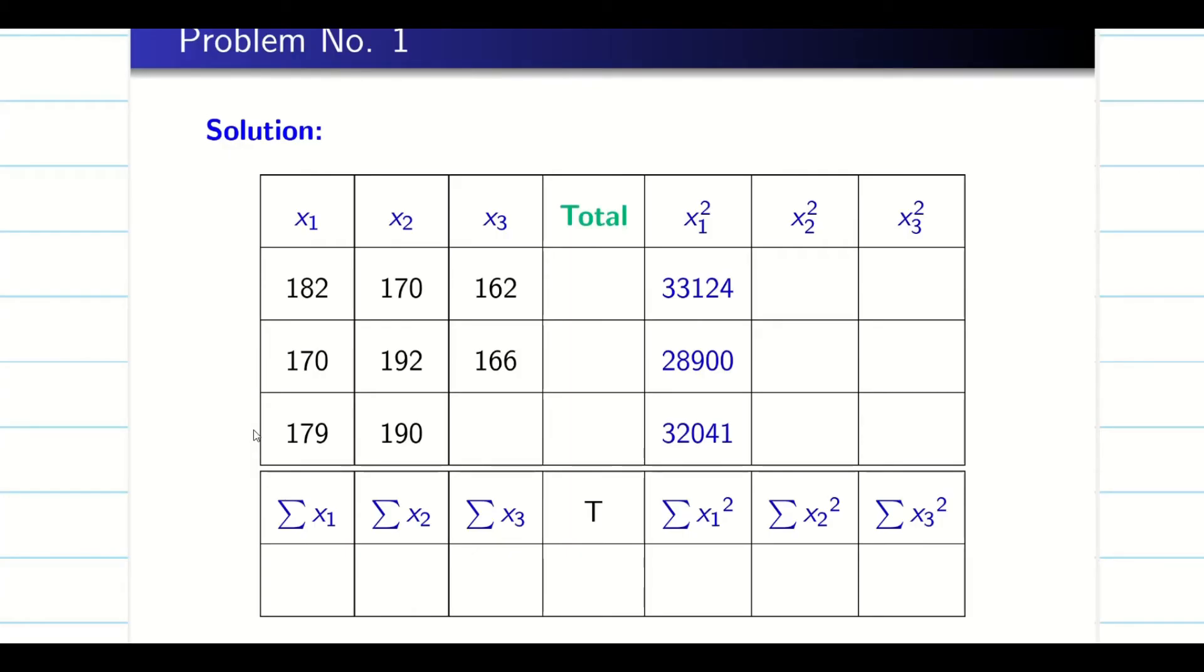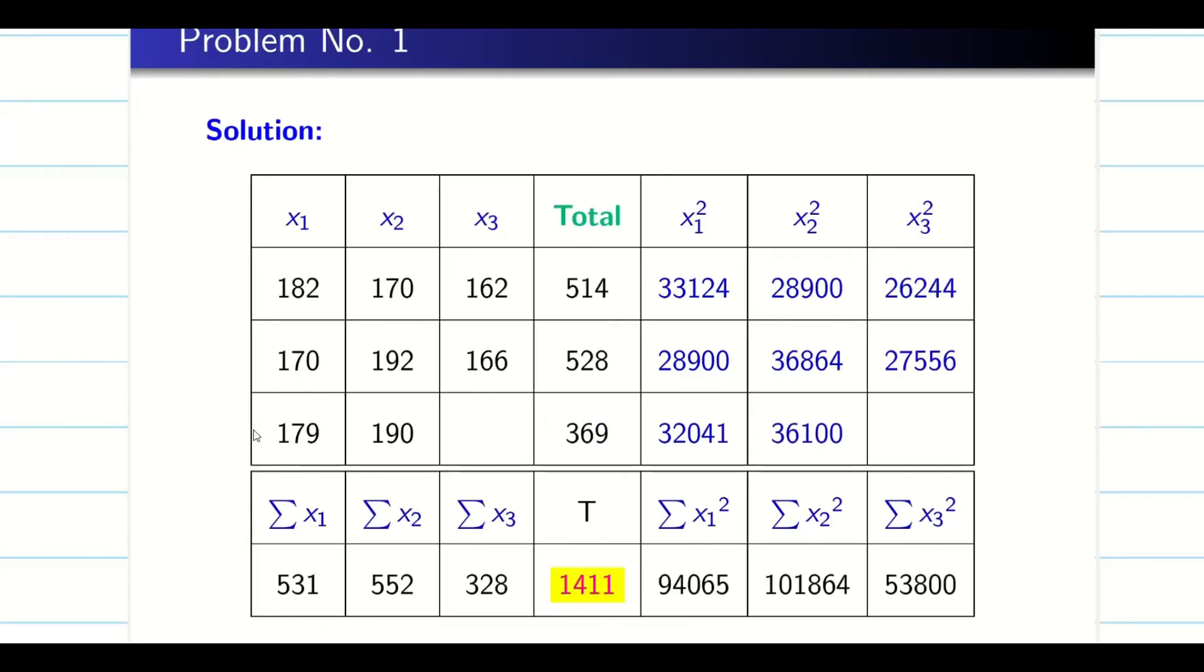Before that, what I am going to do, I am going to square the X₁, X₂, X₃ respectively. Now once you get squared, you do the row sum. You do the row sum here: 514, 528, 369. Similarly, do the column sum and when you do the grand sum, you can check your row sum and column sum will tally and it will be the same value. If not, go and check where you made the mistake squaring or in the adding. Done. Now the table is ready.